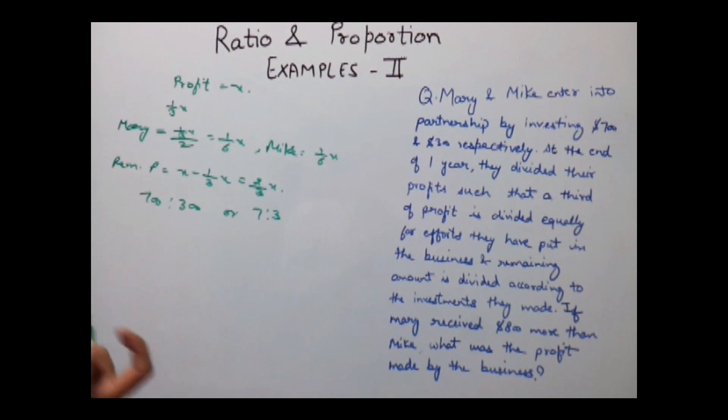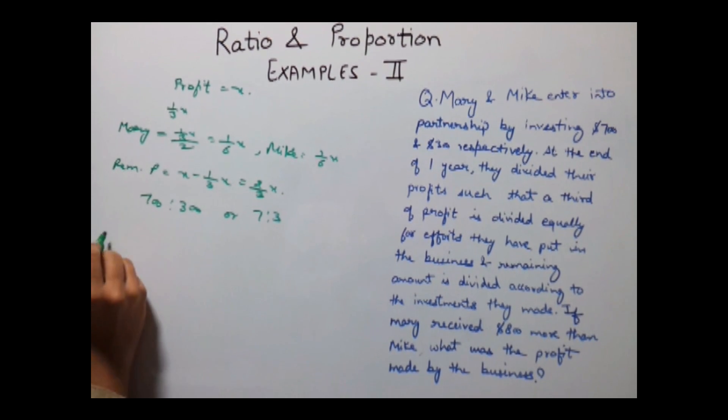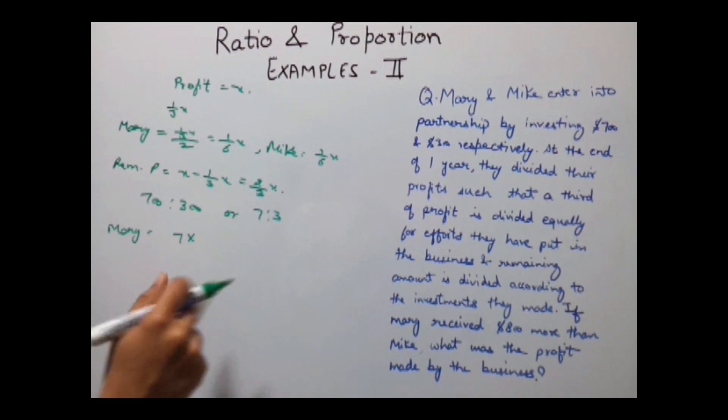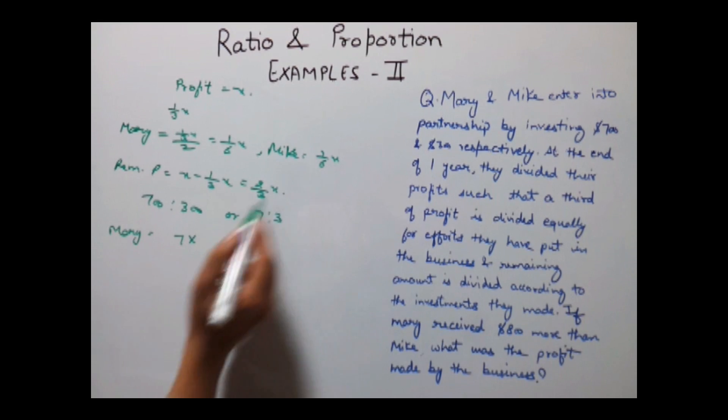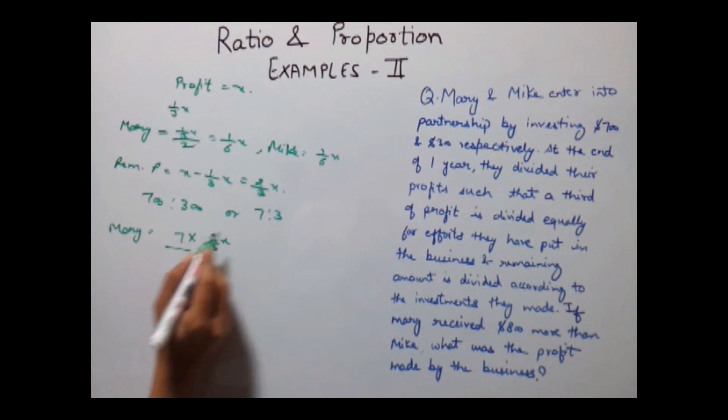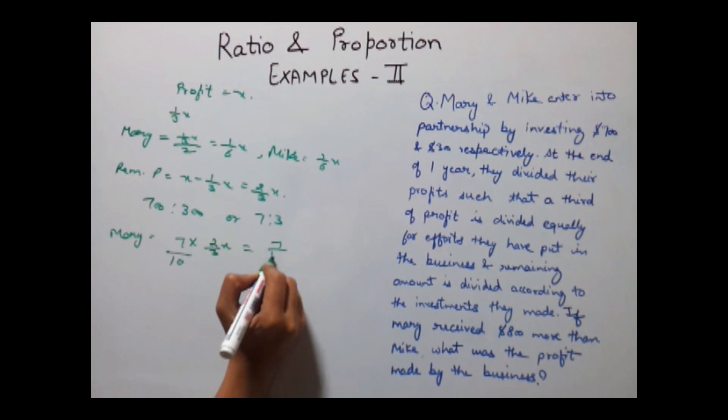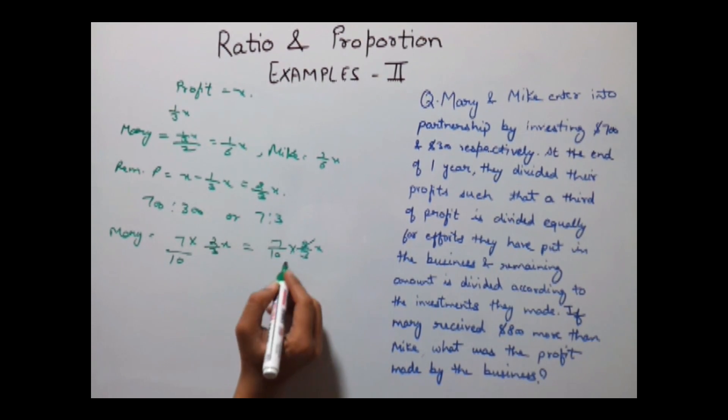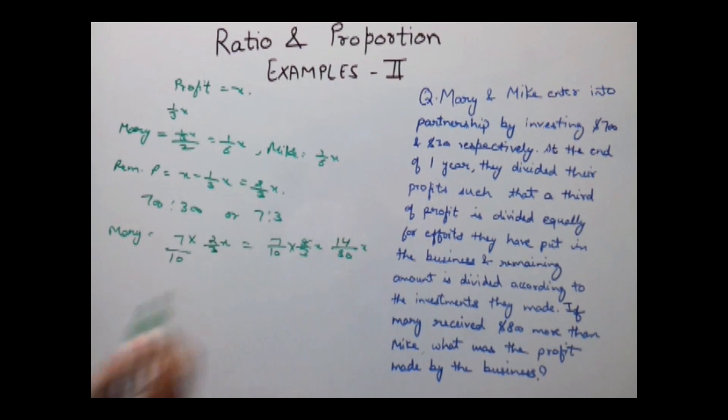Let's find out what would be their part. The part of Mary which is 7 will be equal to 7, his part, into total amount which is 2/3 X divided by the sum of ratios which is 10. This will give us 7/10 into 2/3 X, which equals 14/30 X.